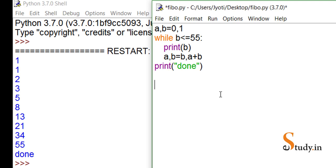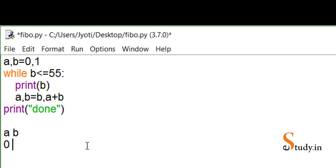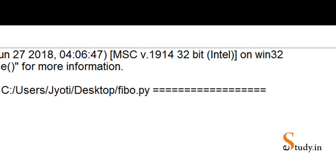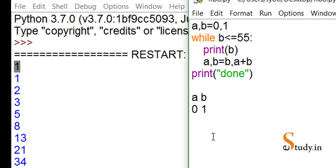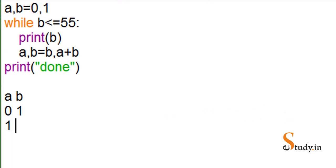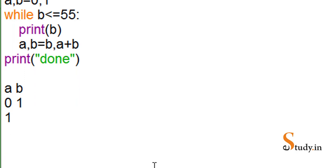Now let's understand the logic. We declared two variables a and b. The initial value of a is 0 and b is 1. When we enter the loop, b is less than 55, so we print b — that means 1 gets printed. Then we say a, b = b, a + b. So a gets the value of b, meaning a becomes 1. For b, it takes the previous value of a — which is 0 — so b becomes 0+1=1. Next iteration, 1 gets printed again.